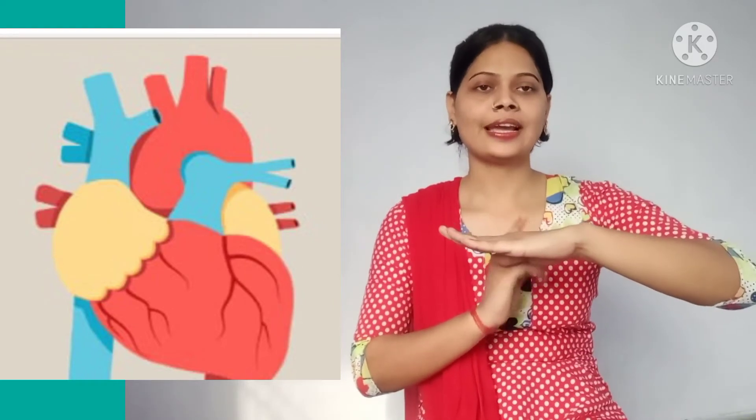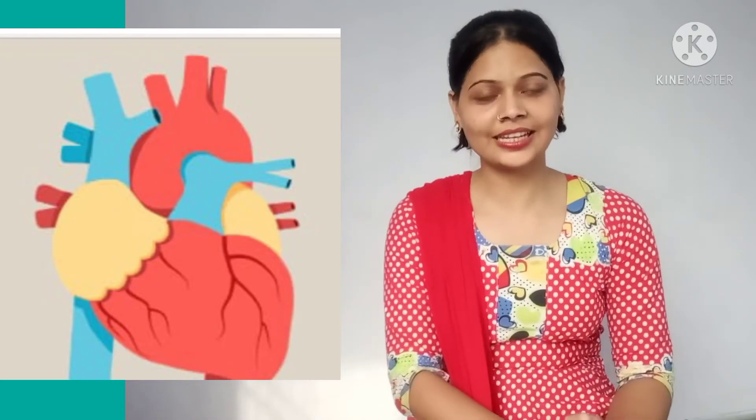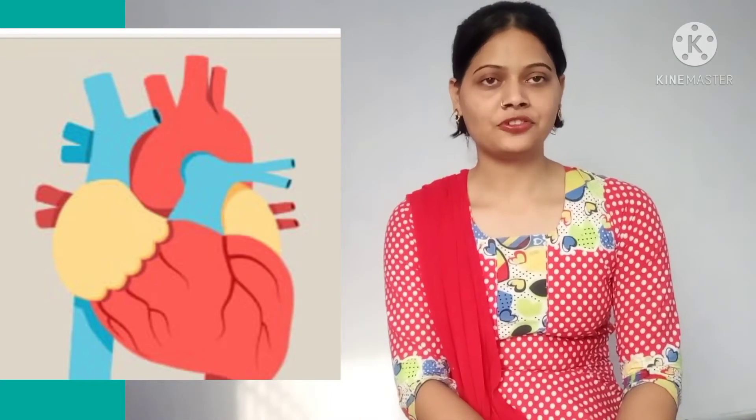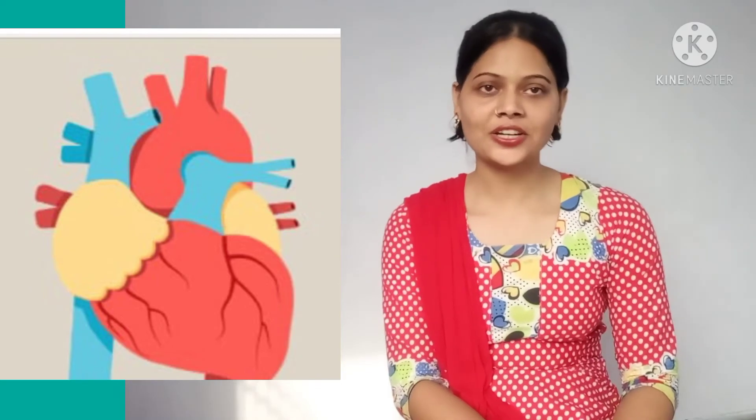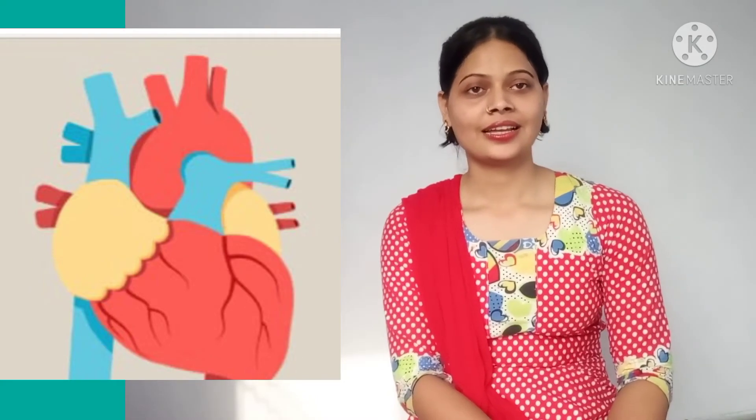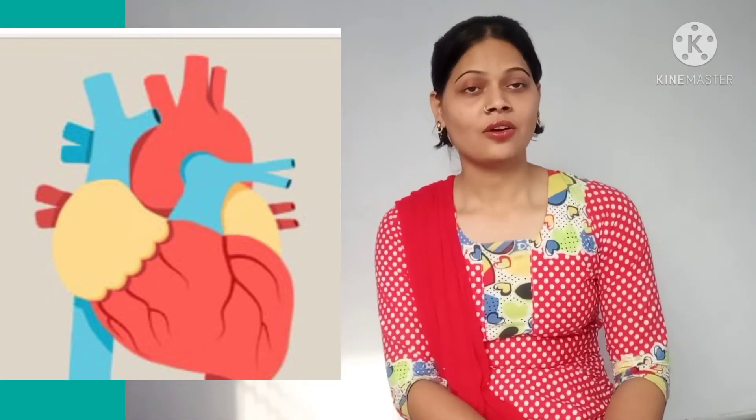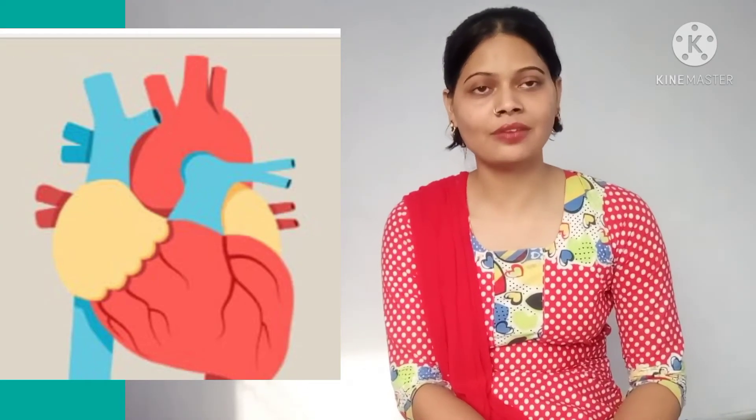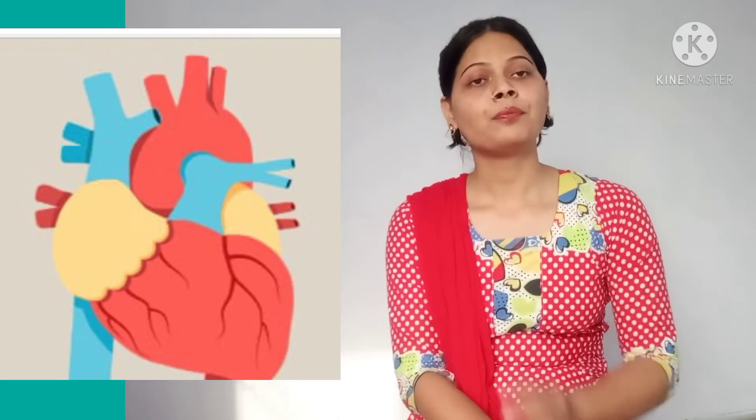To prevent mixing of oxygenated and deoxygenated blood, valves are present like tricuspid valve and bicuspid valve. What is under right auricle and right ventricle? The atrioventricular aperture, which is guarded by tricuspid valve. The right side of our auricle and ventricle is guarded by tricuspid valve. And the left side of our auricle and ventricle is guarded and protected by bicuspid valve. Because valves prevent the backflow of blood, they work to stop the backflow.